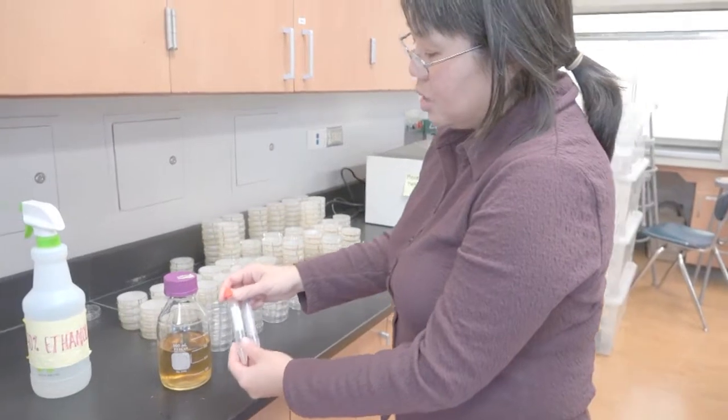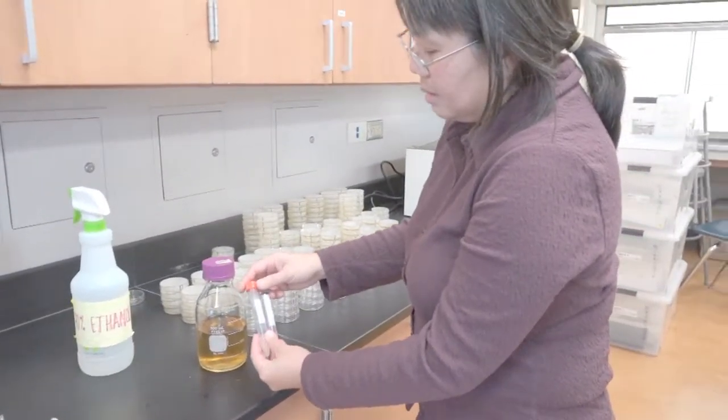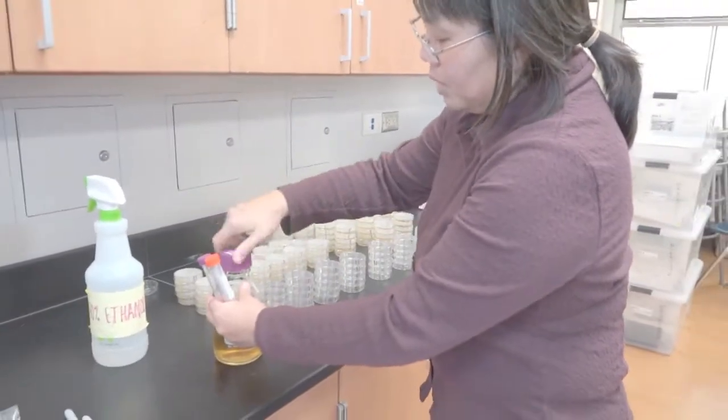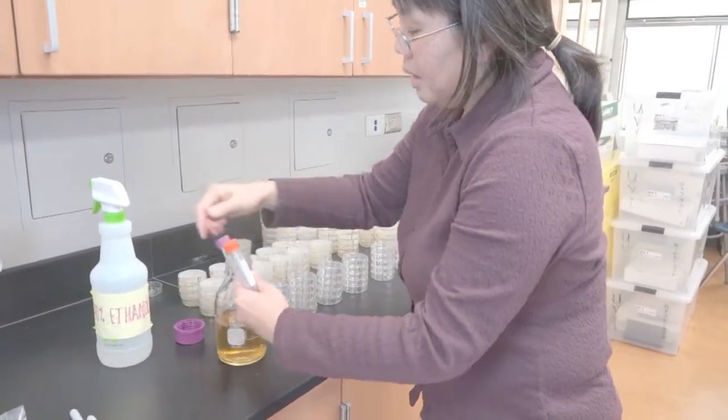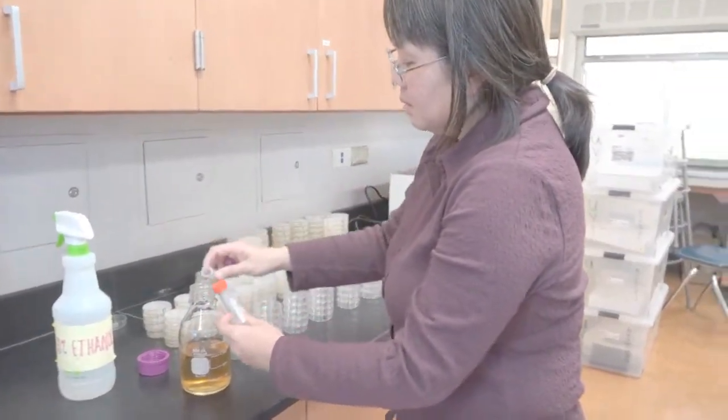We have 3 mils each of Arabinose and Ampicillin, which is the exact amount we need for 300 mils of LB agar. So I just dump it all in.